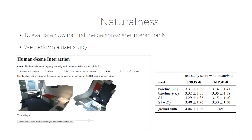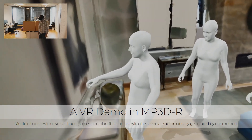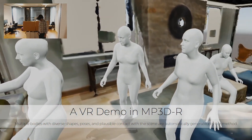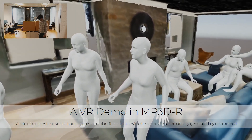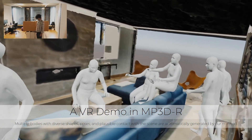We run a user study to evaluate naturalness. The user interface is on the left. On the right, we can see that the S1 model with post-processing is better than other methods, but worse than the ground truth. We can also see that generated people have diverse shapes, natural poses, and plausible contact with the scene.